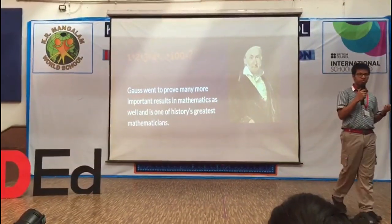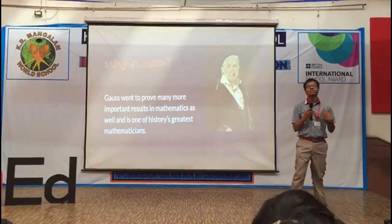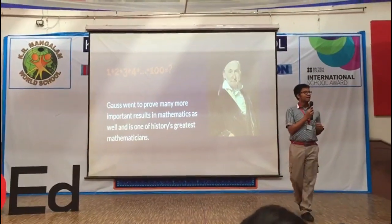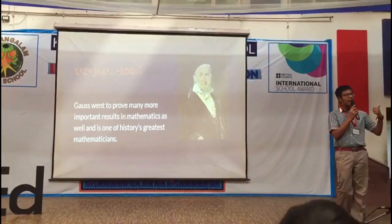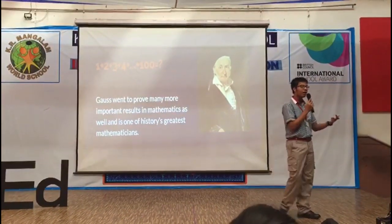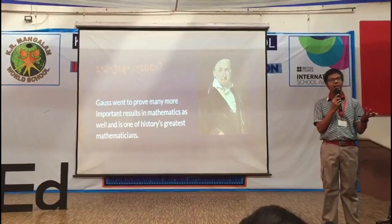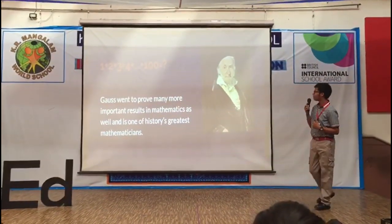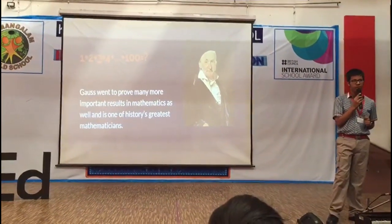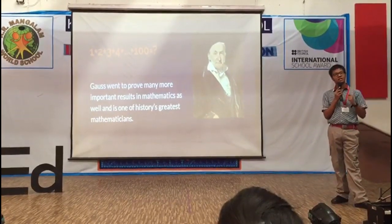Do any of you know how? What could be his reasoning? His reasoning was simple: 1 and 100 sum up to 101, so do 2 and 99, so do 3 and 98. These are 50 pairs of numbers, all of which sum up to 101, so the sum is 50 times 101 — that is 5050. Gauss went on to prove many more mathematical results and is one of the most famous mathematicians ever. He approximated the number of primes up to certain numbers at merely the age of 15, and the Gauss approximation is still in use today.